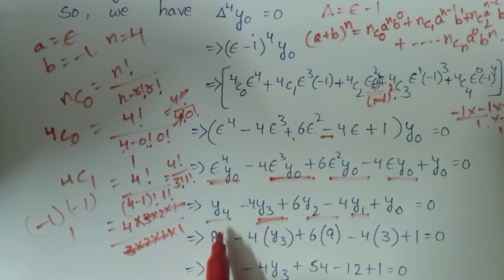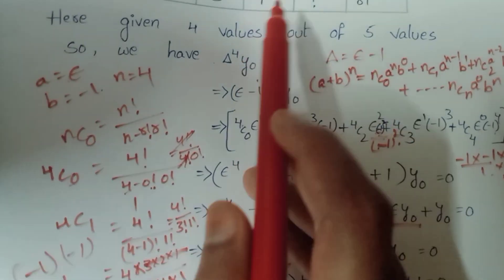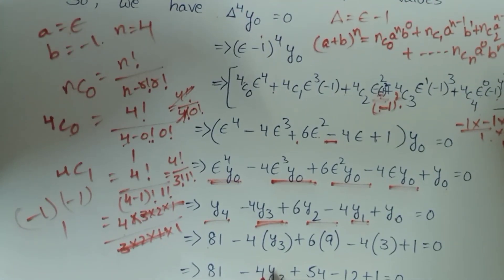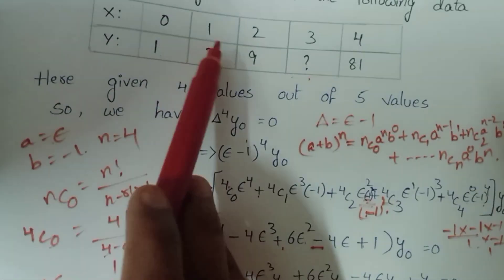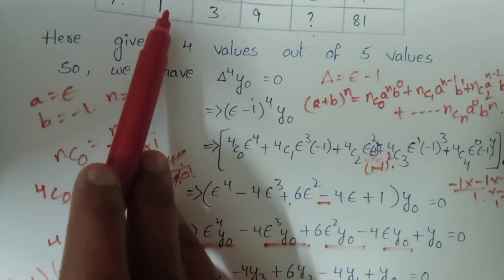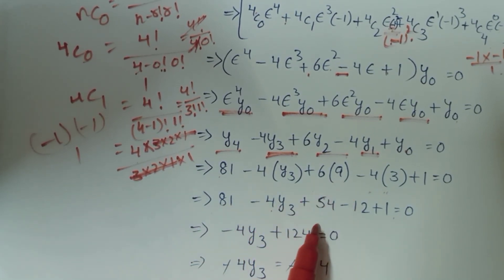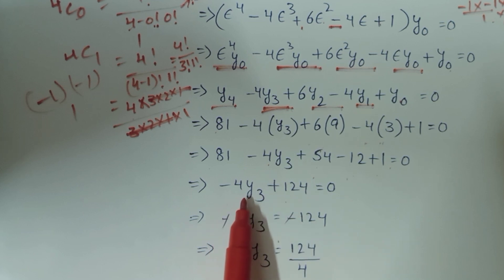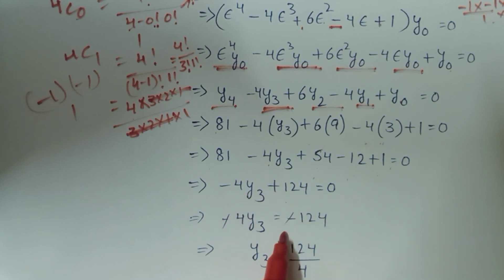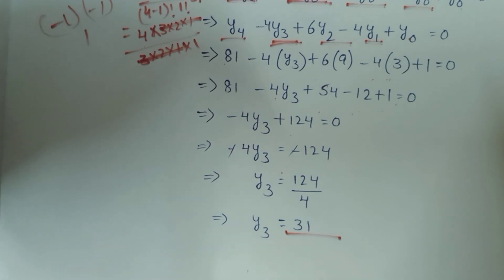Here y4 equals 81, y3 is unknown, y2 equals 9, y1 equals 3, y0 equals 1. Substituting: 81 minus 4·y3 plus 6·9 minus 4·3 plus 1 equal to 0, which is 81 minus 4y3 plus 54 minus 12 plus 1 equal to 0. So 124 minus 4y3 equal to 0, giving y3 equal to 124 divided by 4 equal to 31. The missing value y3 is 31.